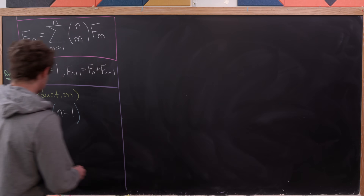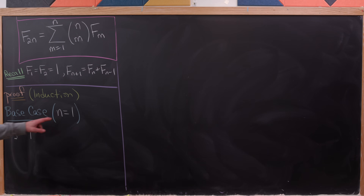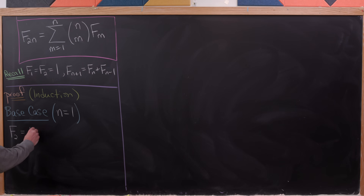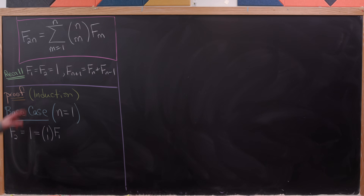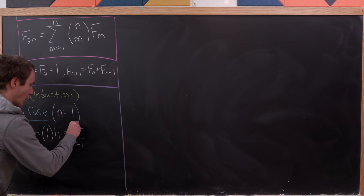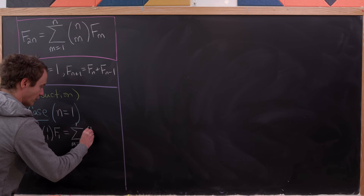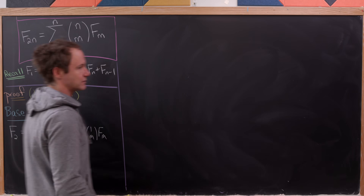Let's take our base case to be n equals 1. We observe that f sub 2 is equal to 1. The n equals 1 case gives a 2 in the subscript. But 1 is the same as 1 choose 1 times f sub 1, which equals 1. That's the same as the sum as m goes from 1 to 1 of 1 choose m times f sub m.